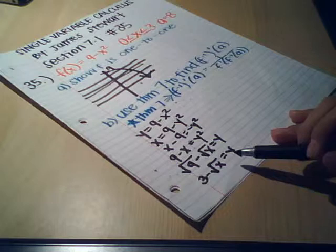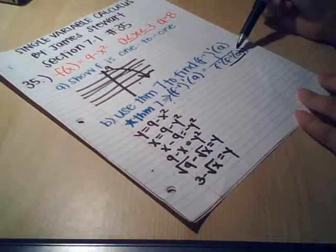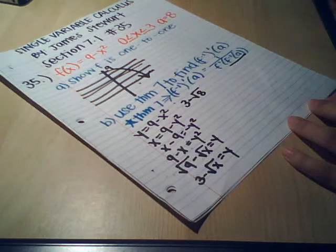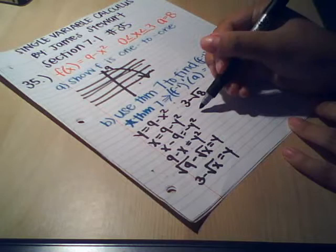So right here is our inverse. We're going to take this part of the equation first. So we found the inverse, now let's plug in A, which is 8. And we're going to get 3 minus square root 8. So this is our first part.